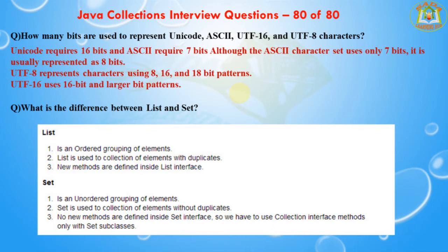The next question is what are the differences between List and Set? List can contain duplicate elements whereas Set can contain only unique elements. A List is an ordered grouping of elements and is used to collect elements with duplicates. No new methods are defined inside the Set interface, so we have to use Collection interface methods only with the Set subclasses. These are the major differences between List and Set.